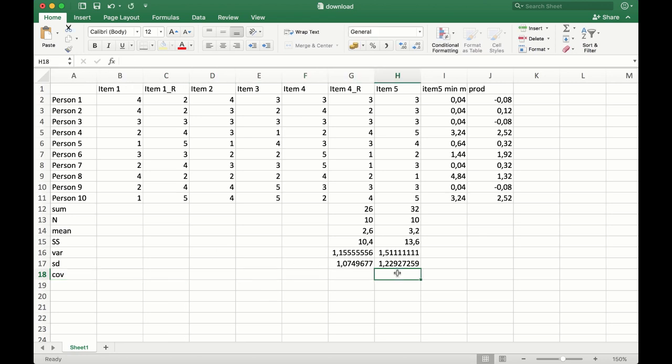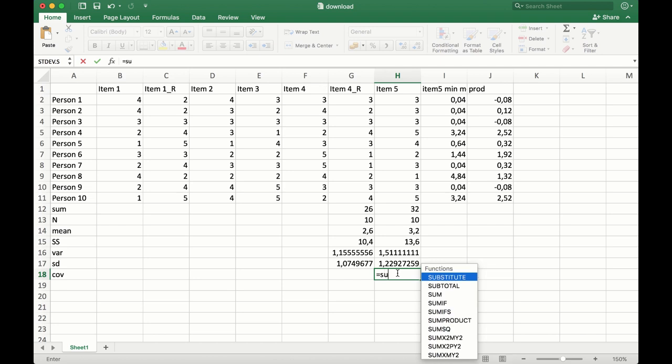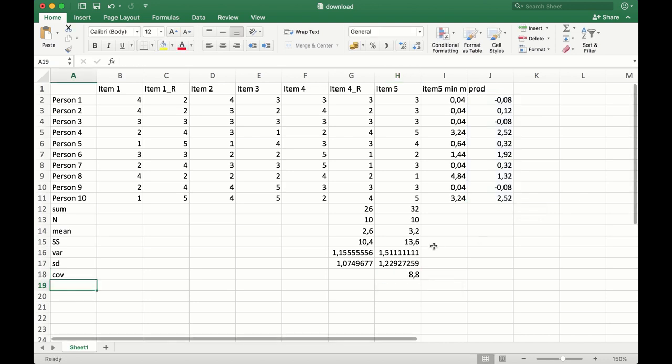For the covariance, we have to use the sum function on the products. There we go. So this is the upper part of the function.